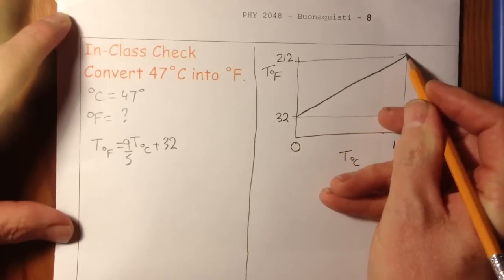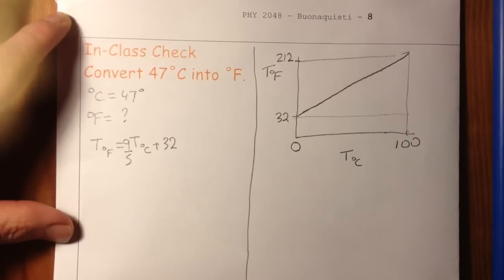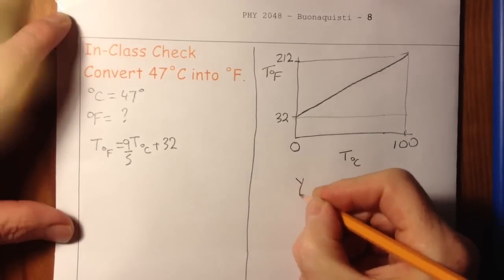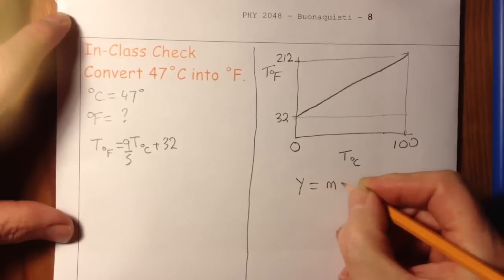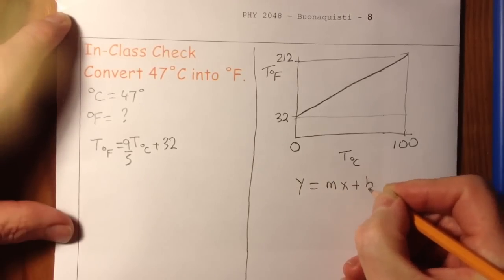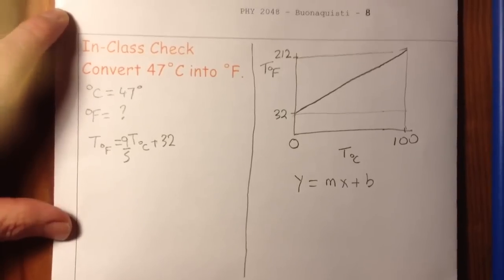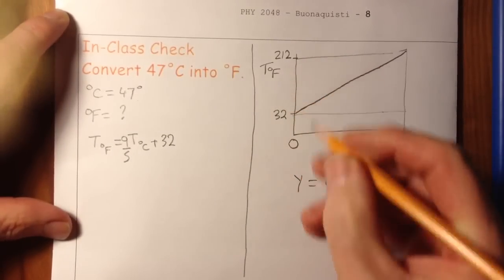And if I think about it being a straight line, that's a straight line graph. So just as I say Y is equal to M X plus B, I can look at this axis and say, well, this is degrees F rather than Y.